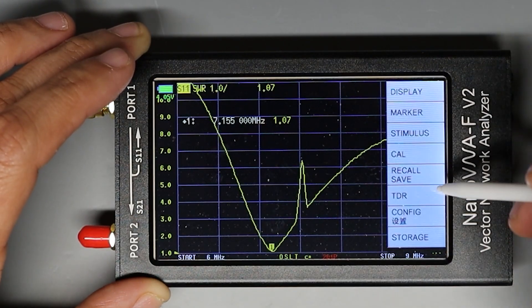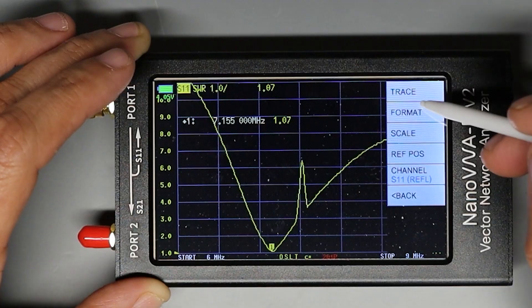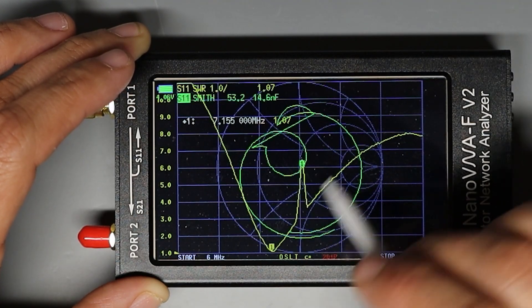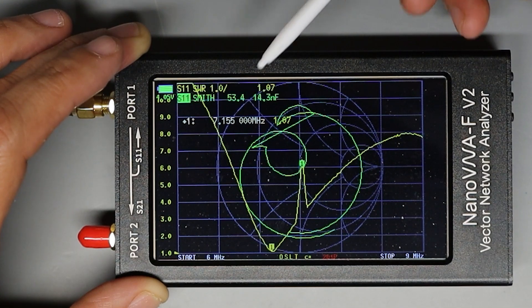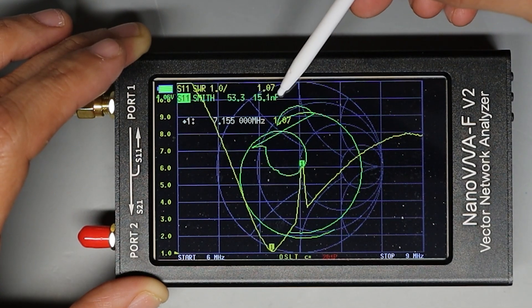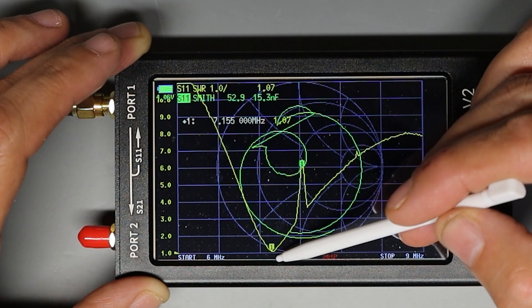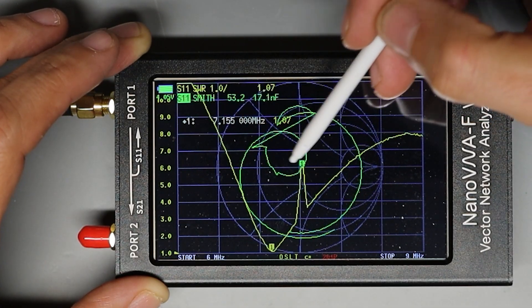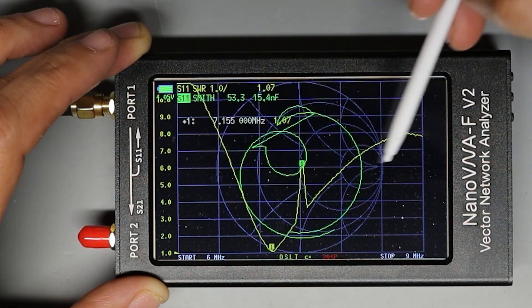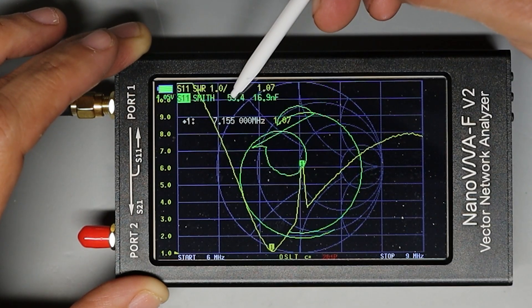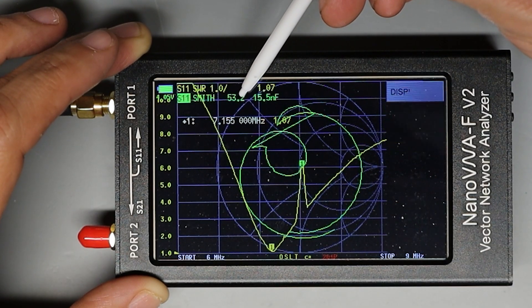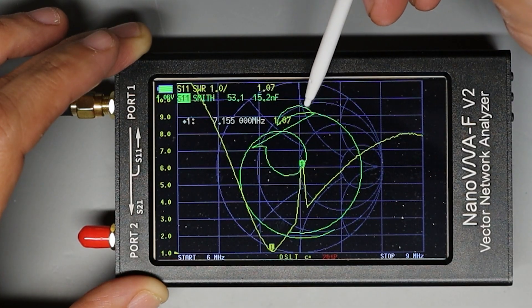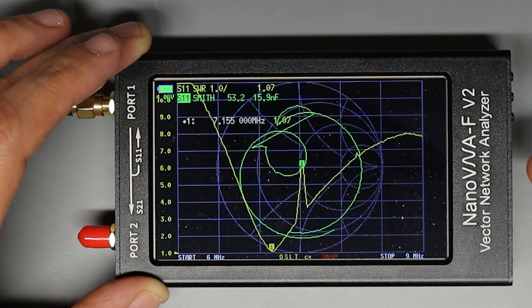So now at this point what I can do is I can also turn on one of the other traces. So now with the Smith chart enabled it looks a little bit messy but we can also see the impedance measurement. So with marker number one at the SWR low point and you can see the green marker number one on the Smith chart plot is right here in the center of the screen, we are getting an impedance of 53.4 ohms with 15.5 nanofarads of capacitance at that SWR low point.